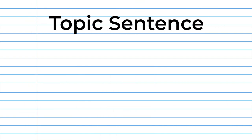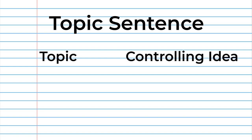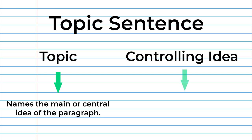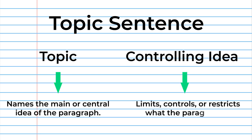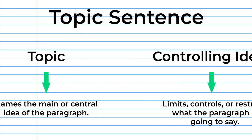The topic sentence is the first sentence in your paragraph. It contains the topic and controlling idea. The topic names the main or central idea of the paragraph. The controlling idea limits, controls, or restricts what the paragraph is going to say. Overall, the topic sentence focuses the information written about the topic in the paragraph so that it has unity.